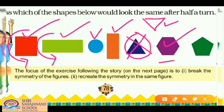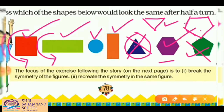There is one more shape that looks the same after a half turn. And last is a pentagon — let me draw its half turn. It looks like the opposite of the original, so it does not look the same. So the triangle and the pentagon do not look the same as their original pictures after a half turn.